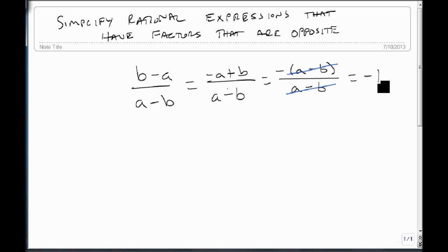So, as a case in point, suppose we have the rational expression, x minus 3 times x plus 2 over 3 minus x times 2x.